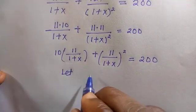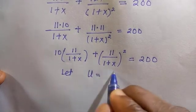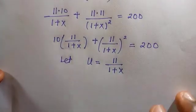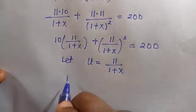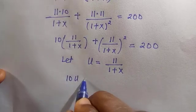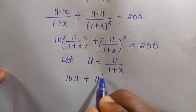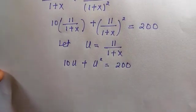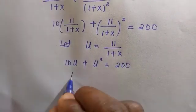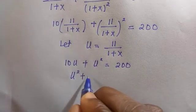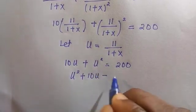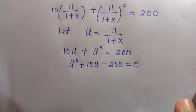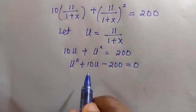We are going to let 11 divided by 1 plus X be another letter. I choose U, so U equals 11 divided by 1 plus X. Wherever I see it, I replace it with U. Then we have 10U plus U squared equals 200. Taking 200 to the left-hand side, we have U squared plus 10U minus 200 equals 0.